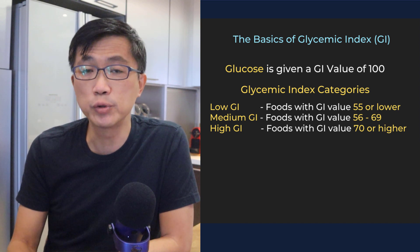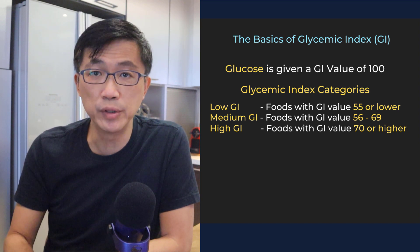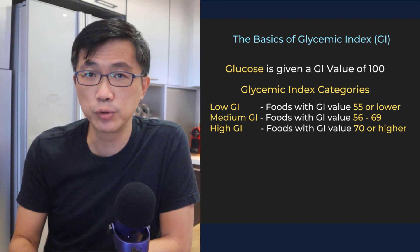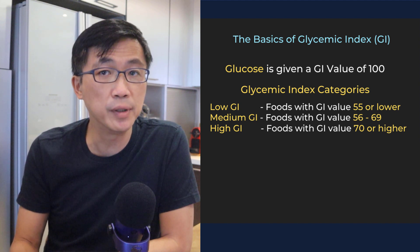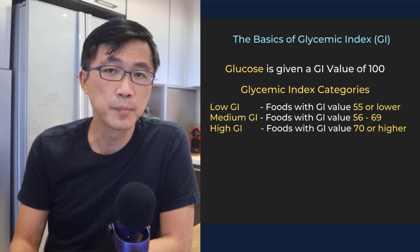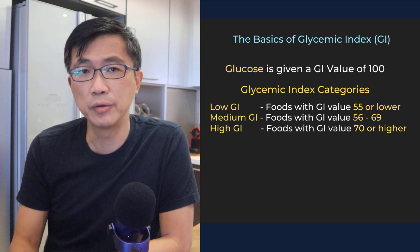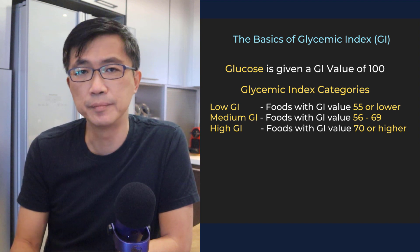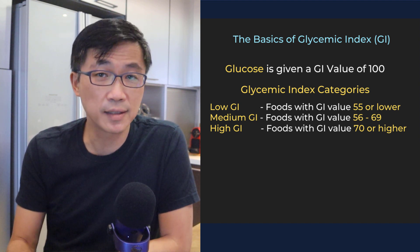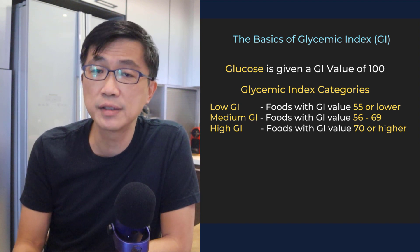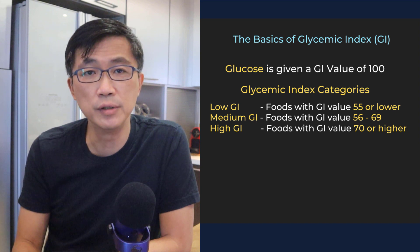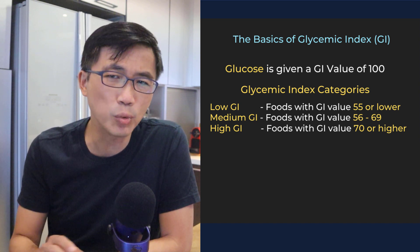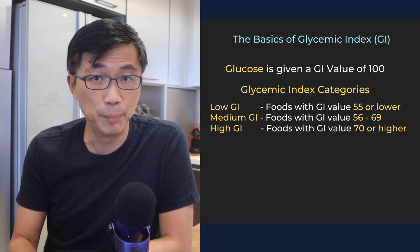Foods are also arbitrarily grouped into three categories: Low GI for foods with a GI value between 1 and 55; Medium GI for foods with a GI between 56 and 69; and High GI for those with a GI of 70 and higher. It is important to highlight that this method of classifying foods into low, medium, and high GI categories is totally arbitrary.